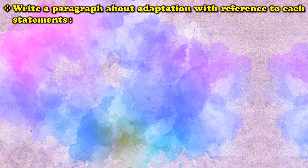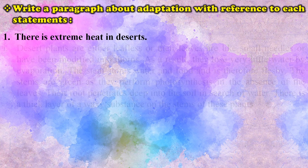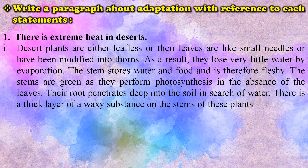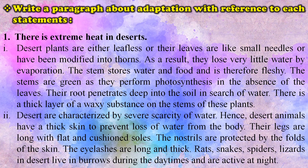Write a paragraph about adaptation with reference to each statement. First, there is extreme heat in deserts. Desert plants are either leafless or their leaves are like small needles or have been modified into thorns. As a result, they lose very little water by evaporation. The stem stores water and food and is therefore fleshy. The stems are green as they perform photosynthesis in the absence of the leaves. Their roots penetrate deep into the soil in search of water. There is a thick layer of a waxy substance on the stems of these plants.